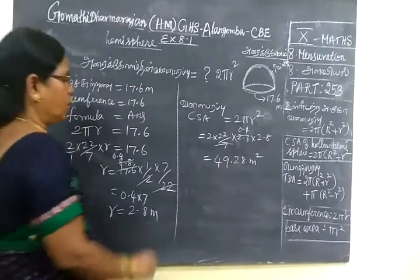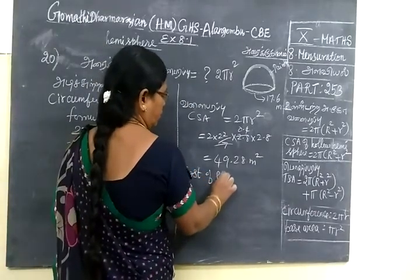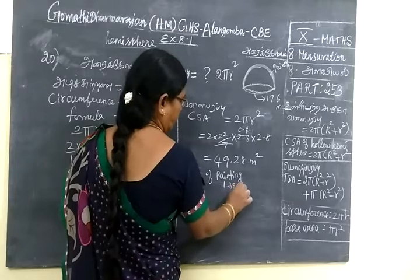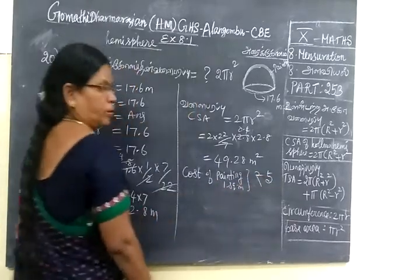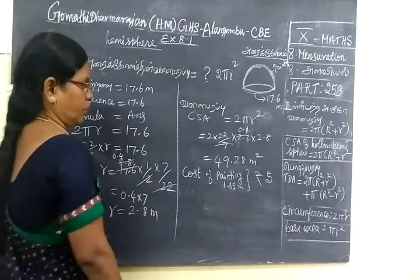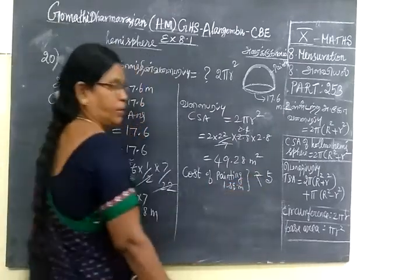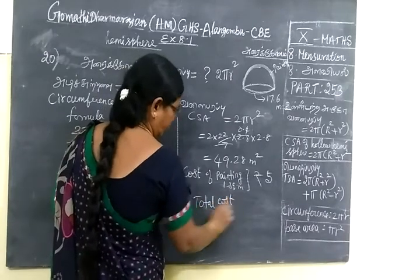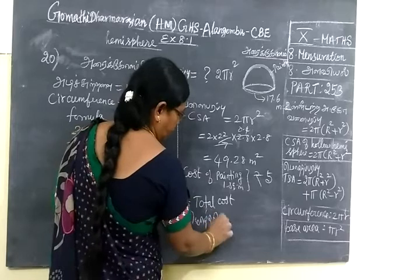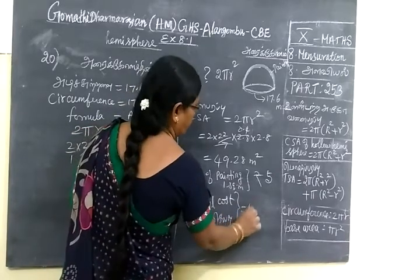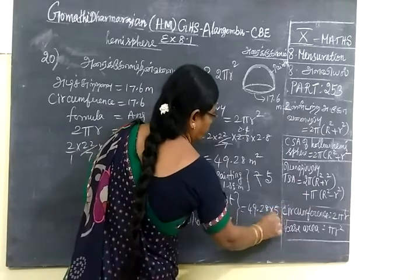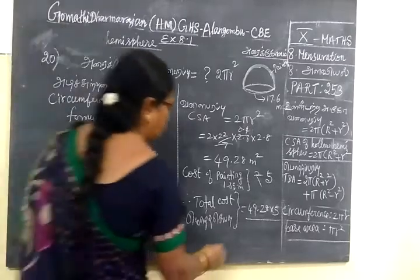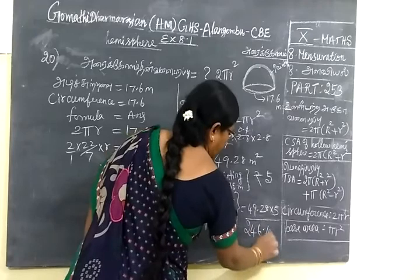Next step is given cost of painting for 1 square meter is Rs.5. Therefore, total cost: 1 square meter is 5 rupees, so multiply 49.28 into 5. The answer is 246.40 rupees.